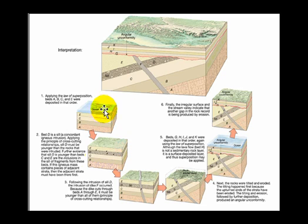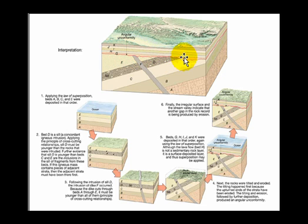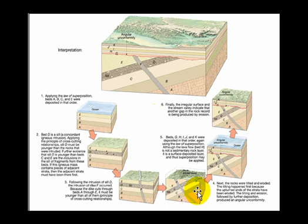Here's what's going on in this environment: original deposition of these four beds, then D came into place, then we work through with E, F coming in, cutting across another sort of igneous mass that only goes up to a certain point and doesn't continue above this unconformity here. Then the beds down here are tilted into almost their final configuration.